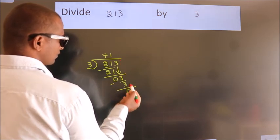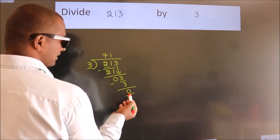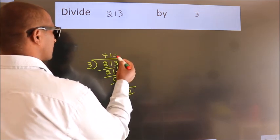After this, no more numbers to bring down. And we got remainder 0. So, this is our quotient.